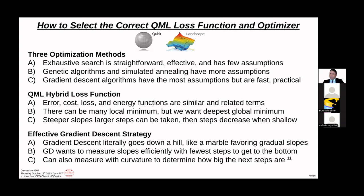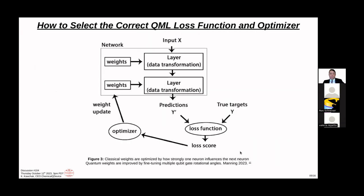Besides just measuring slopes, you can use curvature to determine how big the next steps are. When you see optimizers that mention history, it's basically the previous loss that happened, trying to project into the future more accurately, as opposed to some that are just straightforward and sometimes just inefficient.